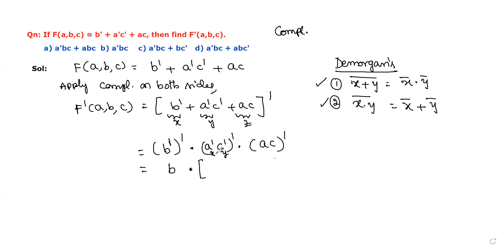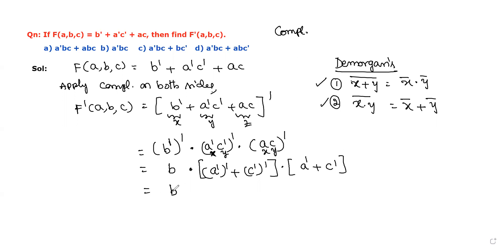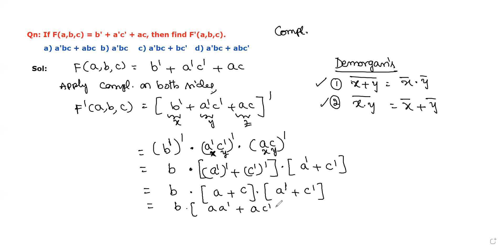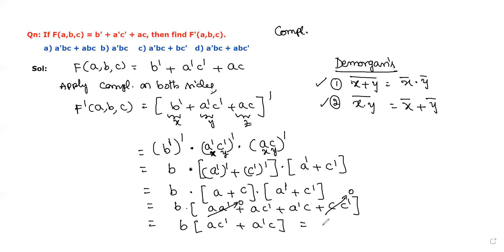Now (b')' = b. For (a'c')', apply the second De Morgan's law: (x · y)' = x' + y', so (a'c')' = (a')' + (c')' = a + c. For (ac)', it becomes a' + c'. So we have b · (a + c) · (a' + c'). Multiplying out: b(aa' + ac' + a'c + cc'), and since aa' = 0 and cc' = 0, we get b(ac' + a'c).